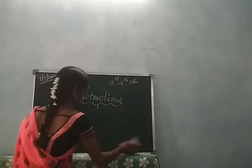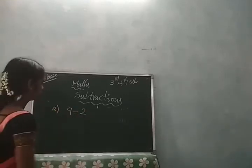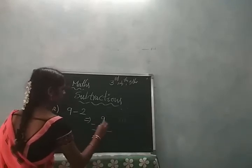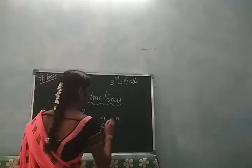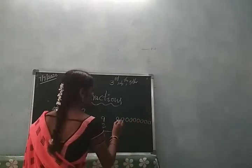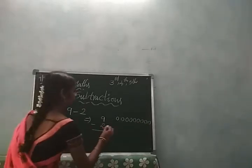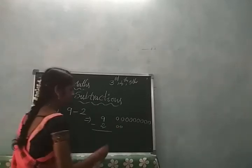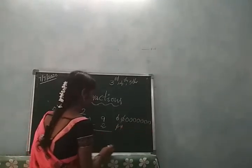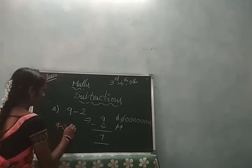Let's do one more example with sticks. I take 9 sticks: 1, 2, 3, 4, 5, 6, 7, 8, 9. I will take away 2 sticks. So 9 minus 2 is equal to 7. Now, 5 minus 5.